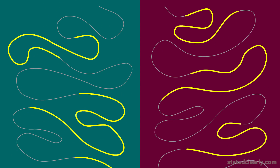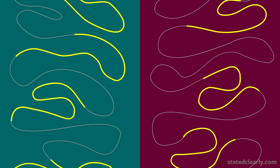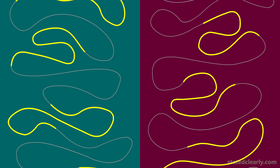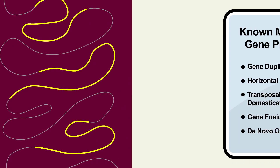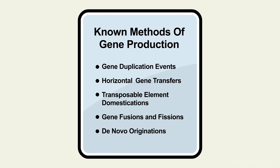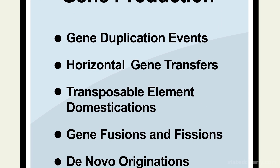Flowers also have genes that can't be found in dolphins. This forces us to ask: how do entirely new genes evolve? Point mutations are clearly not enough. It turns out that over the years, scientists have discovered many natural mechanisms for the evolution of new genes.